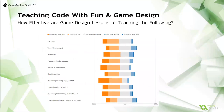We sent out a questionnaire to our teachers and received 150 responses. I always thought that game design would be a great way to teach coding, but I was surprised it came through as just one of the most important factors. Looking at the top-performing elements — rated as somewhat effective or better — we have: improving learning engagement at 94.6%, individual confidence at 94%, planning at 91.4%, improving the student-teacher bond at 90.6%, programming languages at 89.3%, and improving class behaviour at 86.7%.